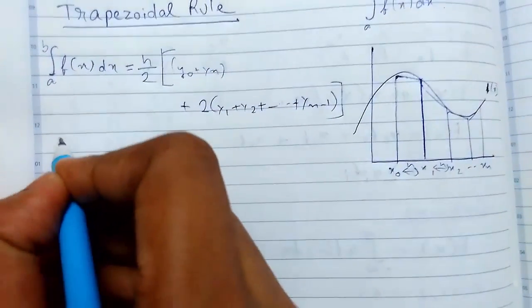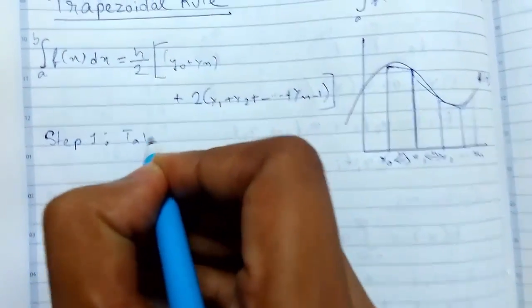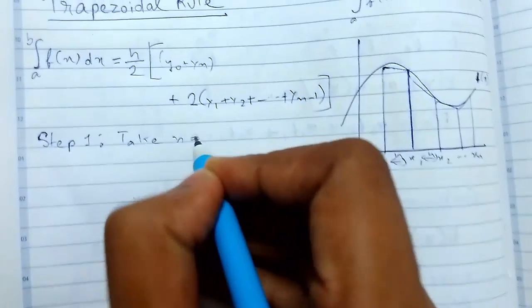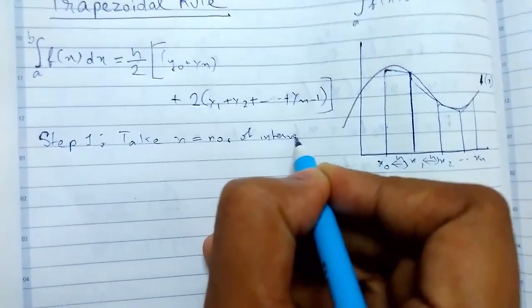Steps for solving the problem by trapezoidal rule: Step 1 - Take n, the number of intervals.